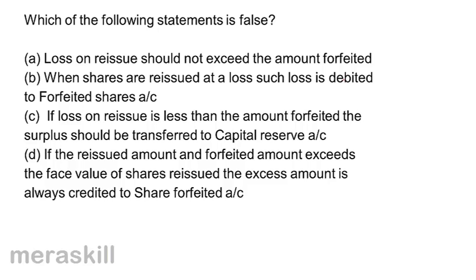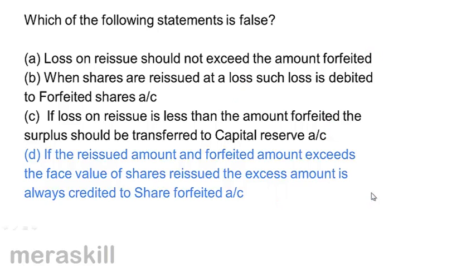Statement A — loss on reissue should not exceed — is true. Statement B — loss is debited to shares forfeited account — is also true. Statement C — surplus is taken to capital reserve — is also true. Statement D is false: if the reissued amount and forfeited amount exceeds the face value, the excess is not retained in the shares forfeited account — it is transferred to capital reserve. So the correct answer is option D.